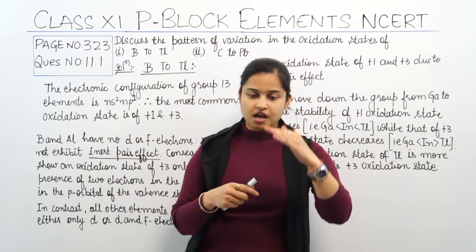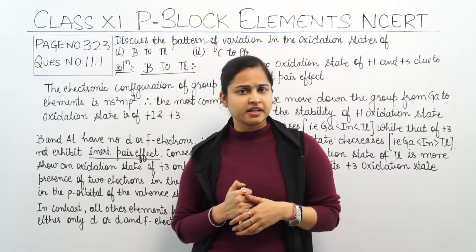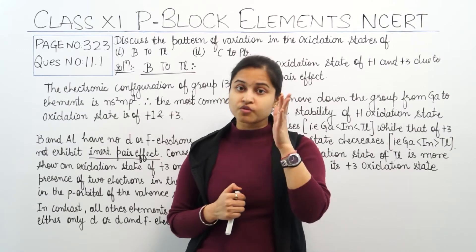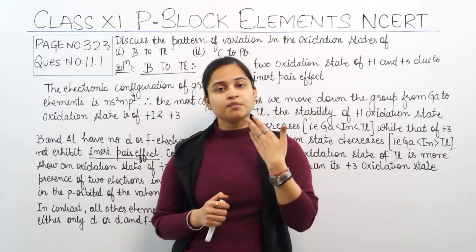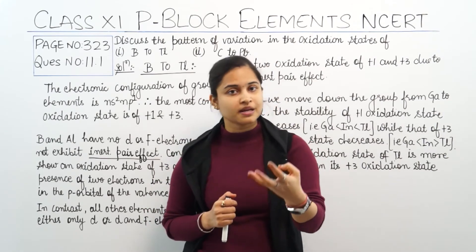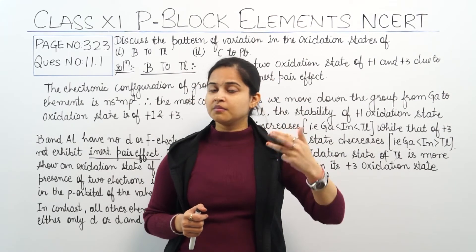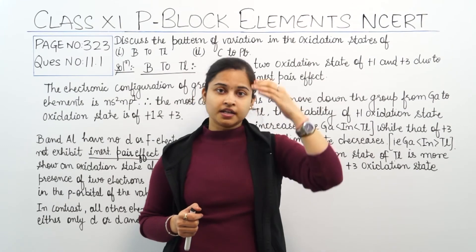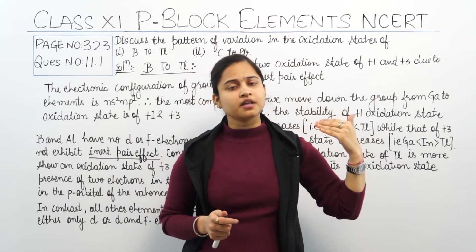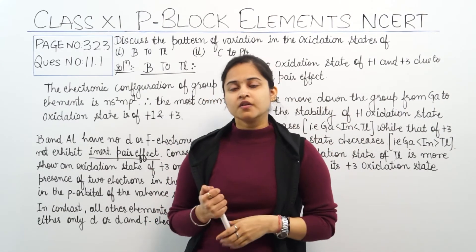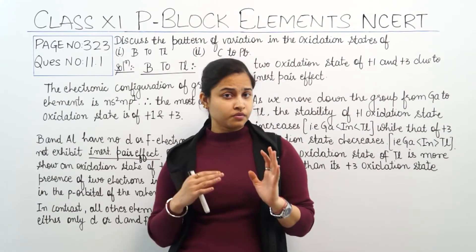After aluminium, we observe two types of oxidation states: +1 and +3. The +1 oxidation state becomes more stable as we move down the group. So in the boron family, from boron to thallium, we observe two oxidation states: +1 and +3. Boron and aluminium show only the +3 oxidation state. From gallium to thallium, the stability of the +1 oxidation state increases.